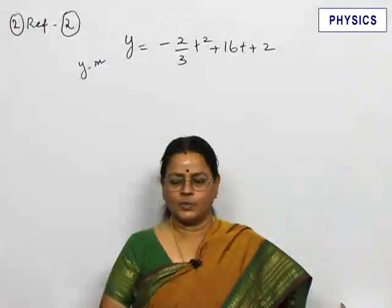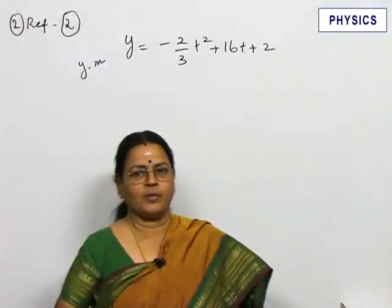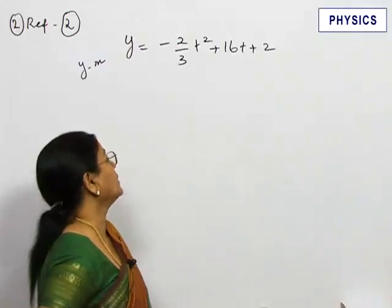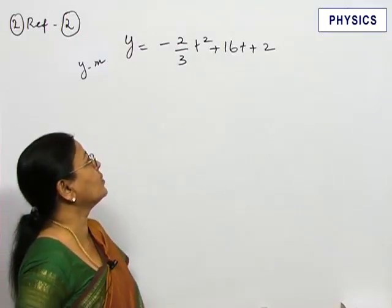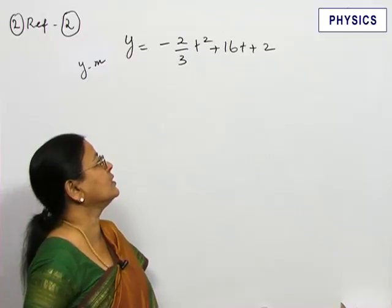Refer to problem 2. In this problem the displacement y in meters is given as y equal to minus 2 by 3 t square plus 16 t plus 2.